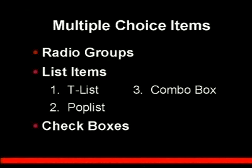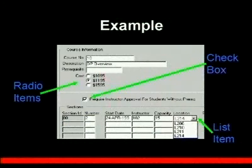We have three more item types, and these all relate to multiple choice items: radio groups, list items, and checkboxes. List items have three different types: a t-list, a pop-list, and a combo box. That really has to do with whether you're giving the user the ability to enter an additional value that's not in the list. Here's an example form showing all the different types — the different multiple choice items, with radio buttons under cost, a checkbox, and a pull-down for location as a list item.